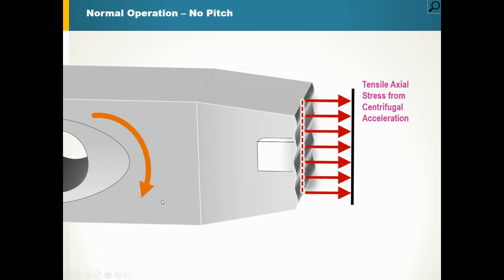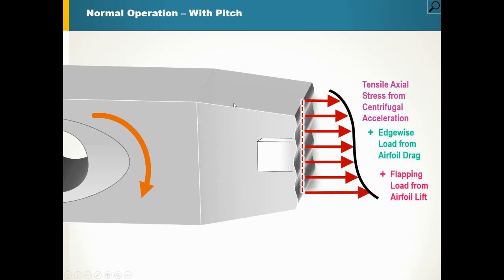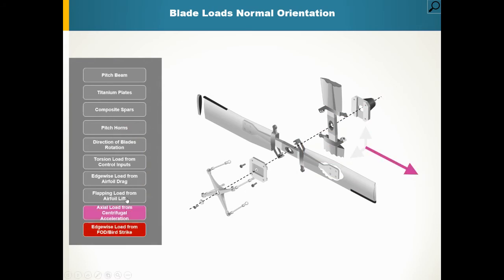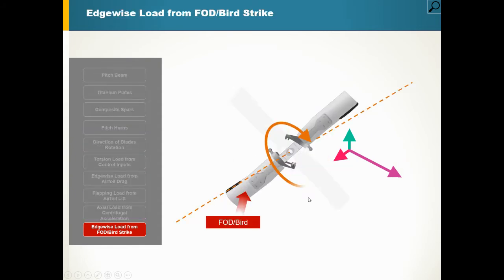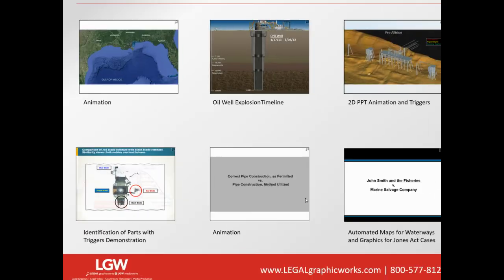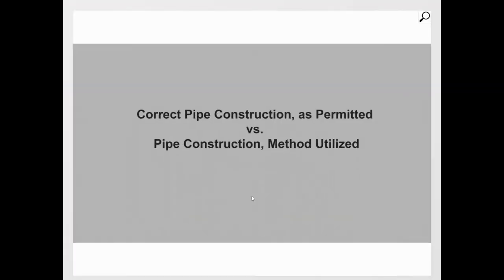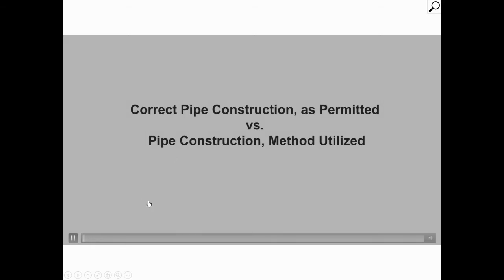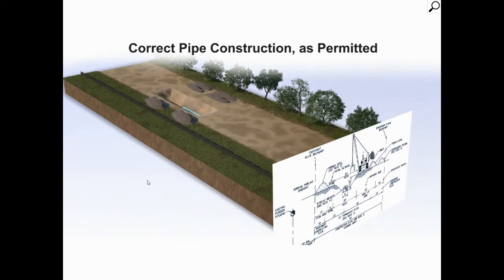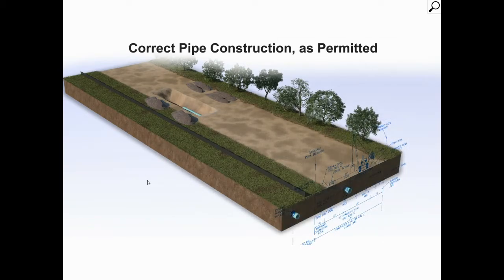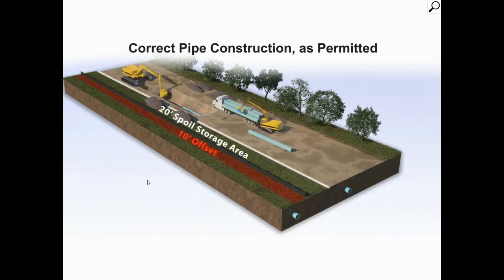We also wanted to be able to show the stresses being put on the blades of the helicopter and how that might affect the damage that was done. You can add in some nice 2D animation in these. In this case, we are putting together an animation showing how some work was supposed to be done versus how the work was actually executed — and I love how we have the plans there.